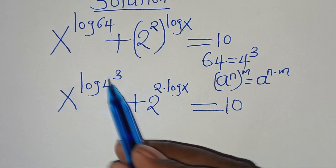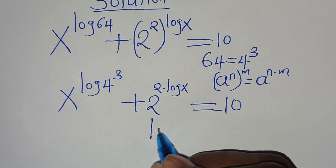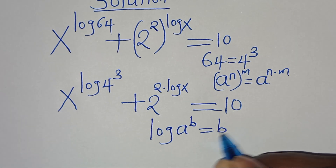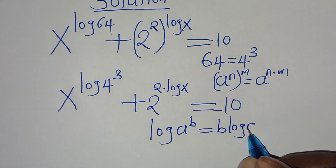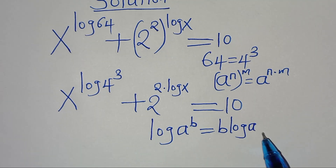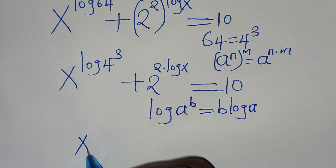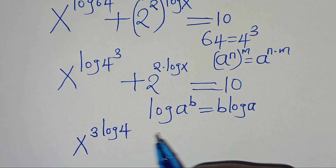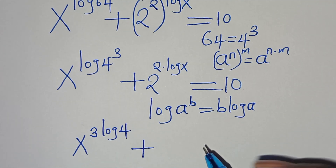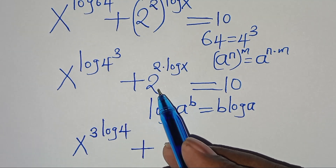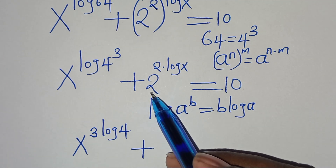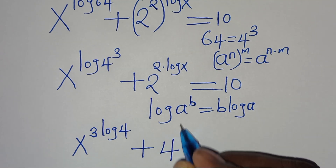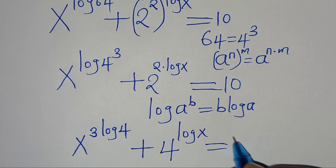Now, log 4 to the power of 3 is in the form of log a to the power of b, which we can express as b times log a. Now let's apply this power property so that we have x to the power of 3 multiplied by log 4, then plus — here we have 2 to the power of 2, which is the same thing as 4, raised to the power of log x — this is equal to 10.